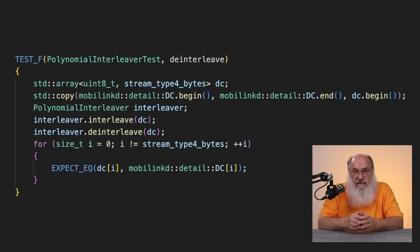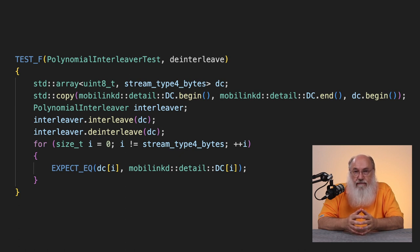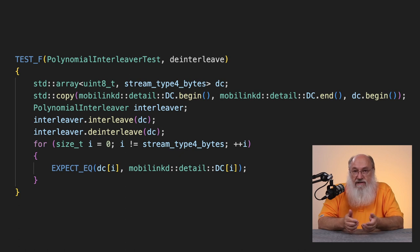This is the simplest possible test for an interleaver. The expectEQ macro inside the loop is part of the Google Test Suite, a popular library used to facilitate and automate unit testing. If the two arguments to expectEQ are not equal, it outputs a message and marks that test as failed, but it doesn't stop the test, so we get a complete list of bytes that don't match. The output shows the value found and the value expected, but unfortunately it doesn't show the index i, so we have to do some extra work to figure out exactly where the test failed.